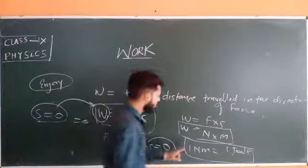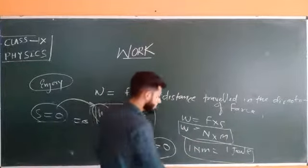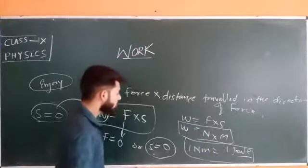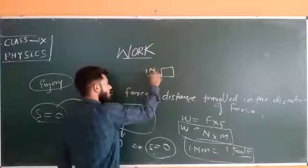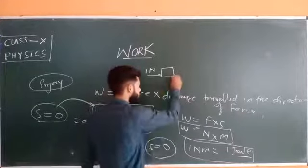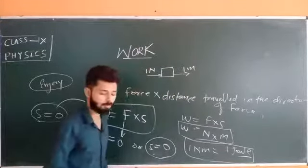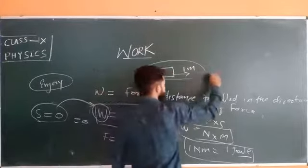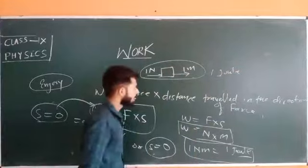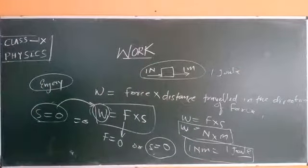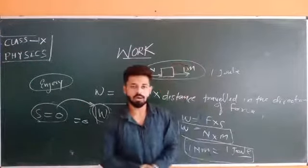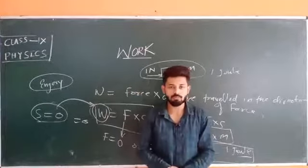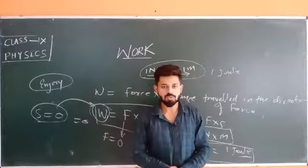If someone asks you what is one Joule, you can say: if we apply a force of one Newton on an object and the object travels a distance of one meter in the direction of the applied force, then the work done is known as one Joule. This is all about work done today. In further classes we will discuss more examples, including cases where work done is zero. Thank you so much and God bless you.